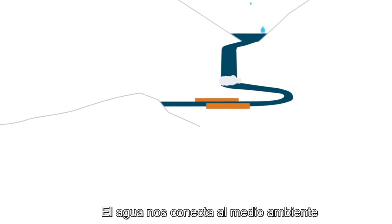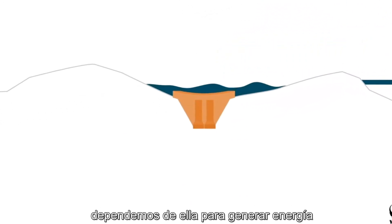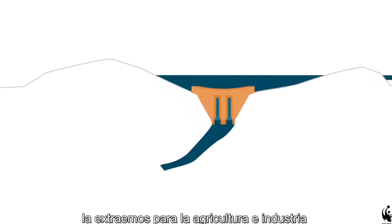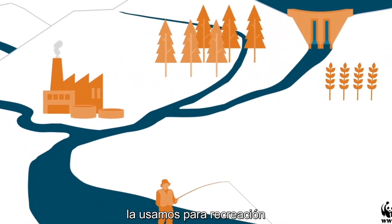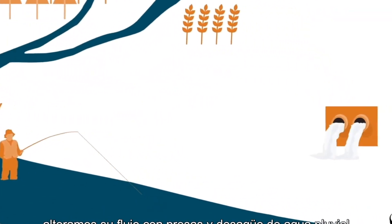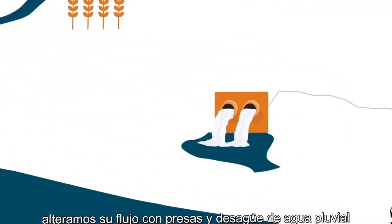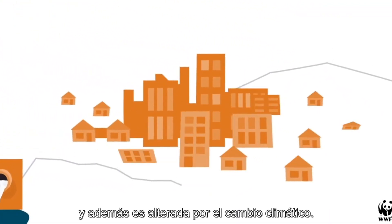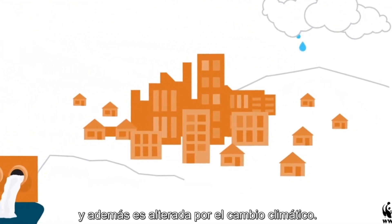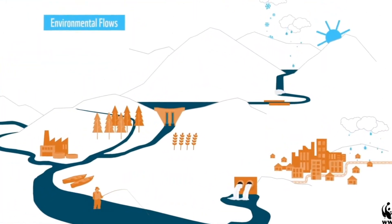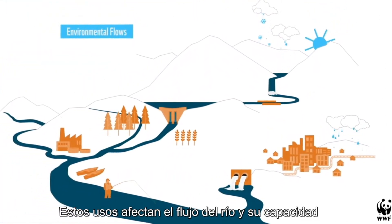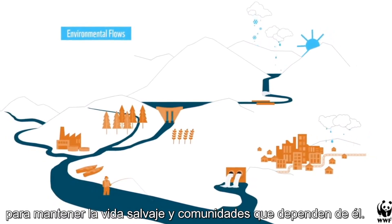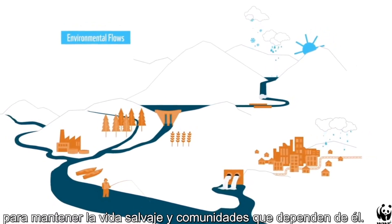Water connects us to the environment. We rely on it for power generation. We extract it for agriculture and industry. We use it for recreation. We alter its flow with dams and stormwater drainage, and it is further impacted by climate change. These uses can affect a river's flow and its ability to sustain wildlife and the communities that depend on it.